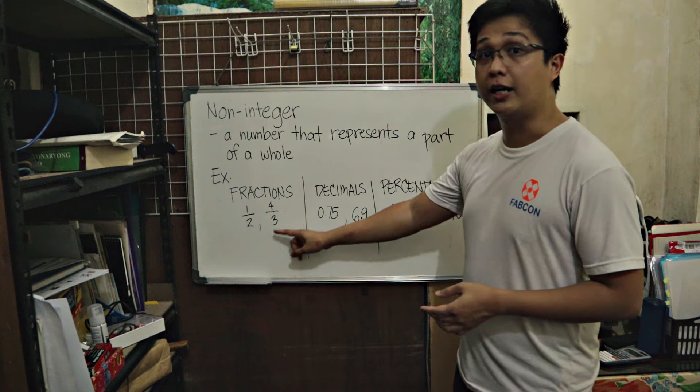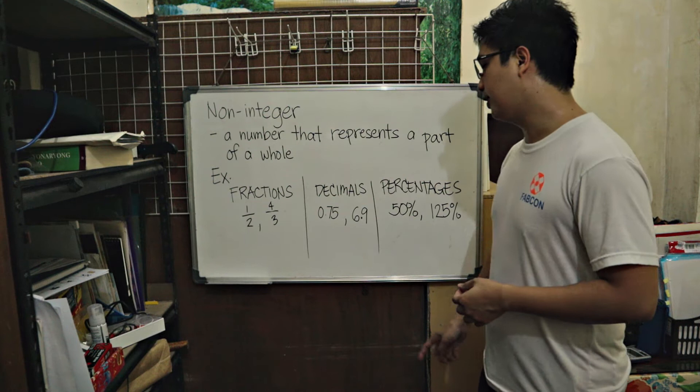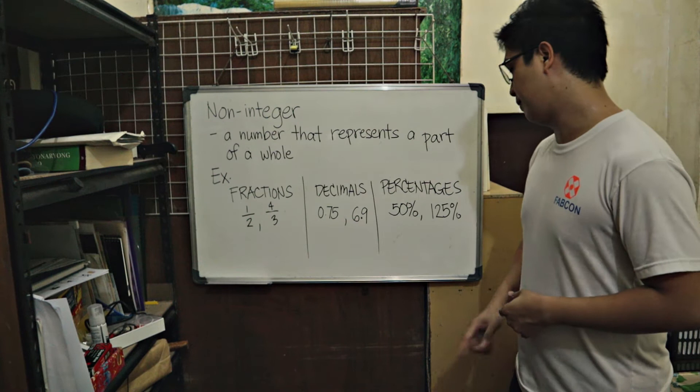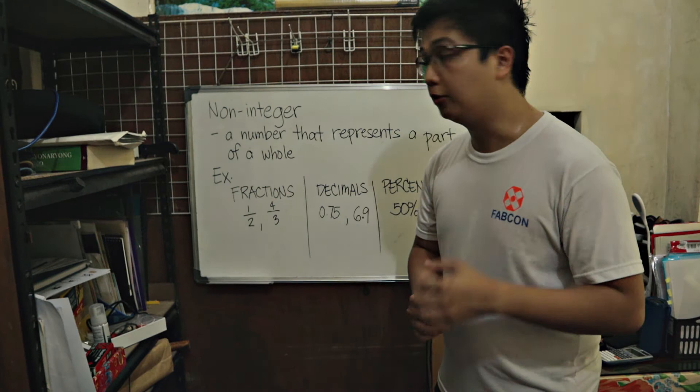Example, mga fraction, pariyos ang one-half or four-thirds. Mga decimal, pariyos ang 0.75 or 75 hundredths, pag 6.9 or 6 and 9 tenths. Percentages naman, may arata sa mga 50% pag 125%. Sa subong, mga ito natutupan ang mga fractions.